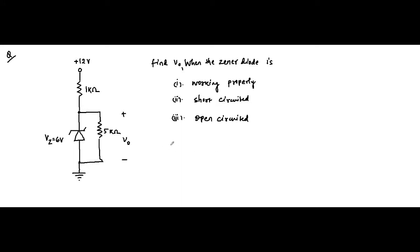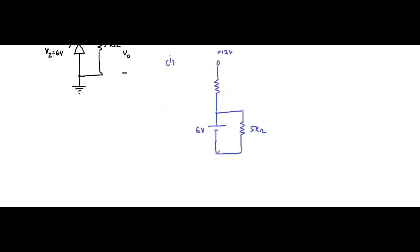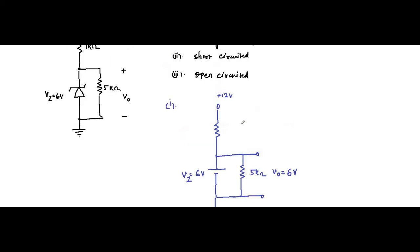When the zener diode is working properly, it means it is in the on state. In that case, the zener voltage is activated and it acts as a constant voltage source. It will be replaced by a constant voltage source of 6 volt. The output voltage appearing across the 5 kilo ohm resistance will be equal to 6 volt.